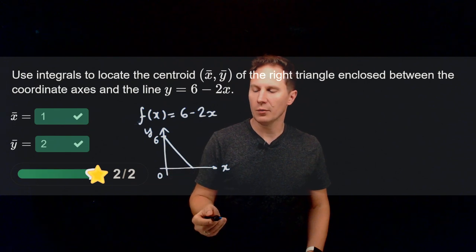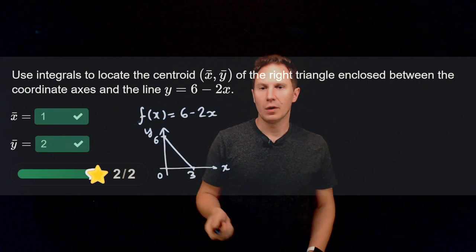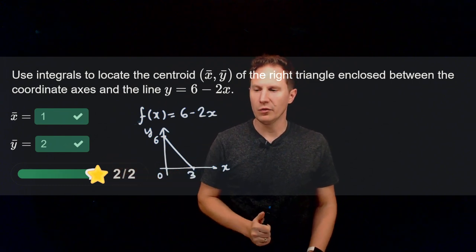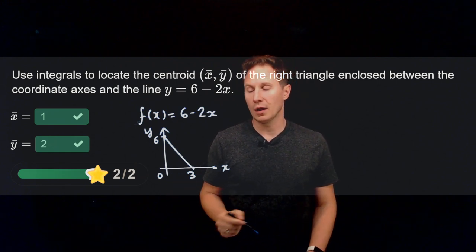That happens at x equals 0 and the x-intercept is 3, so that's where we have y equals 0. So along the x-axis we need to integrate from 0 to 3.